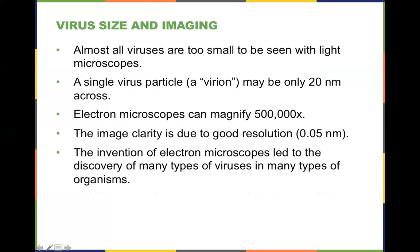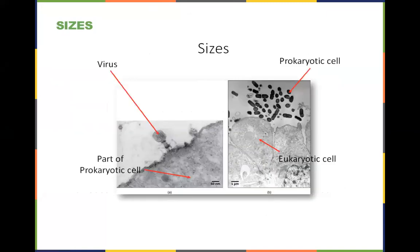Once you started looking, you found them everywhere. Here's that bacteriophage sitting on top of a prokaryotic cell. There's a bacterial cell there, and this is the size of a eukaryotic cell. You can begin to see the scale of the size of the virus — this is a fairly large one right here.